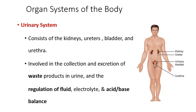The urinary system includes your kidneys, bladder, ureters, and urethra. This is an important system for the excretion of wastes — different kinds of wastes than those eliminated through the digestive system. In addition to eliminating wastes and filtering the blood, the urinary system is also very important for the regulation of fluid balance, electrolyte balance, and maintaining the correct pH of your blood.